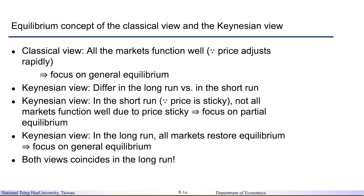Under the Keynesian view, prices are allowed to be sticky. In other words, under the Keynesian view, we assume that in the short run, because prices are sticky, some markets may not attain equilibrium. However, in the long run, when price stickiness is resolved, the economy will attain equilibrium in all markets. From the Keynesian perspective, we separate equilibrium into two time frames: the short run and the long run.